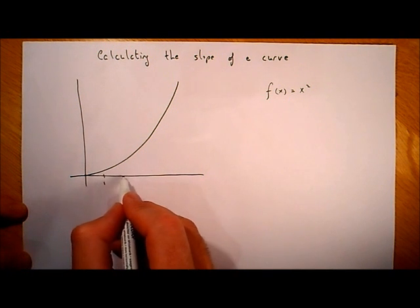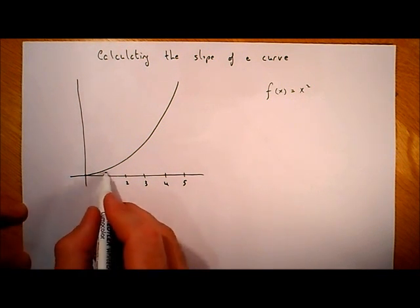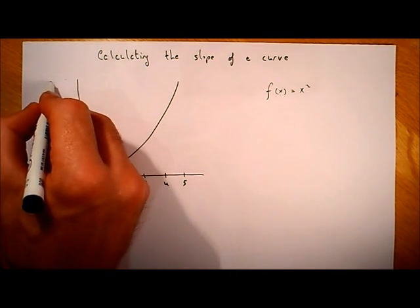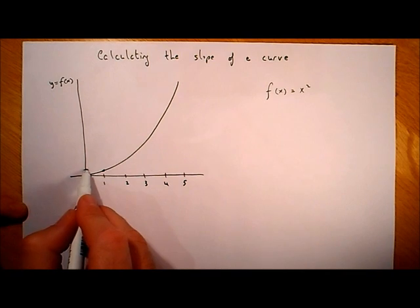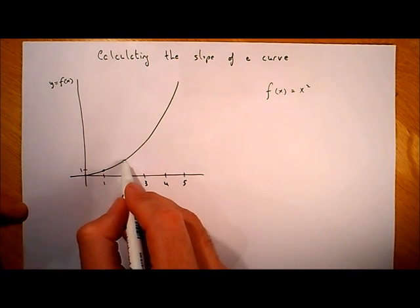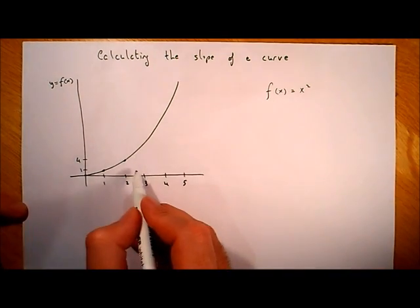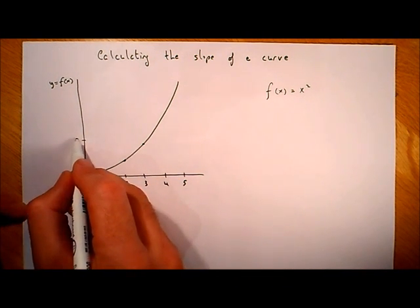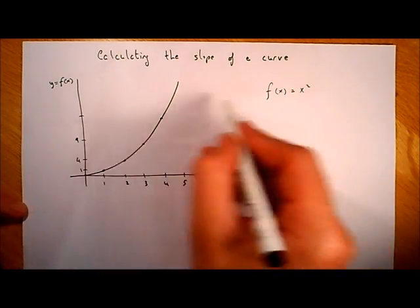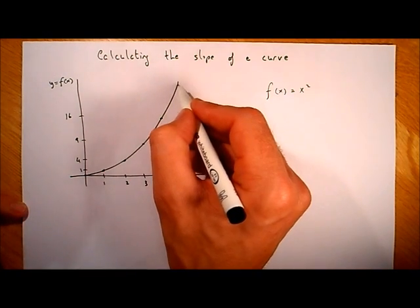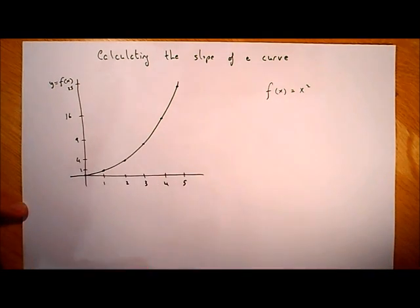Let's mark a few points on it. We have the x values 1, 2, 3, 4, and 5. The y axis is the y = f(x) axis. When x equals 1, 1 squared is 1. When x equals 2, 2 squared is 4. When x equals 3, 3 squared is 9. When x equals 4, 4 squared is 16. And when x equals 5, 5 squared is 25.